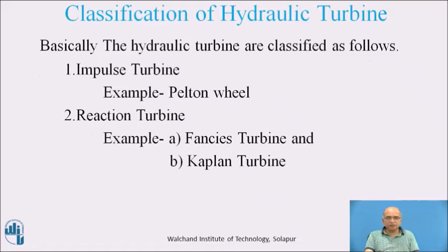Classification: Basically, hydraulic turbines are classified as: 1. Impulse turbine and 2. Reaction turbine. Under the impulse turbine, we have the Pelton wheel. Under the reaction turbine, we have two types — the Francis turbine and the Kaplan turbine.